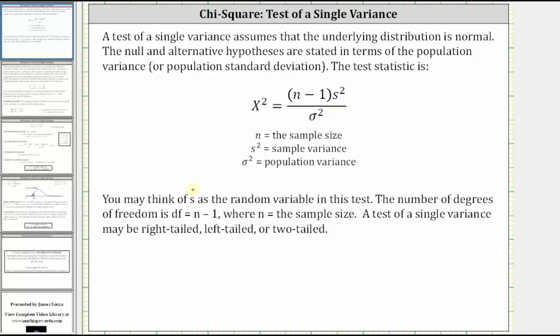You may think of s, the sample standard deviation, as the random variable in this test. The number of degrees of freedom is equal to n minus one, where n is the sample size. A test of a single variance may be right-tailed, left-tailed, or two-tailed.